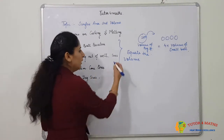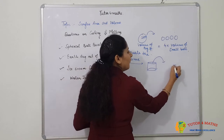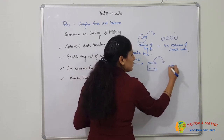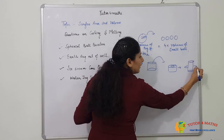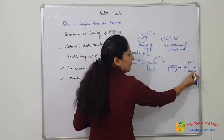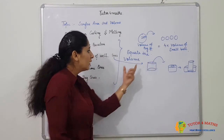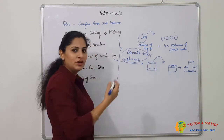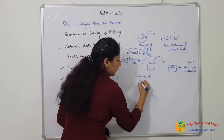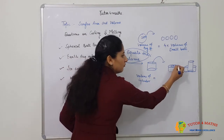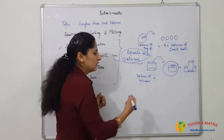In the second question — earth dug out of the well — the earth will be in the shape of a cylinder. We have to make an embankment around the well. This earth is the well, and this is the embankment around it, like the ones we have seen in villages for sitting. We again equate the volume, so the volume of the cylinder equals the volume of the embankment.